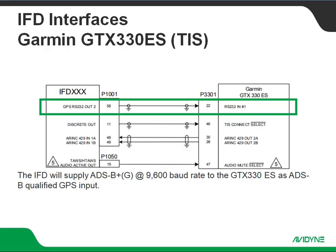So to jump right in, we're going to supply qualified ADS-B GPS data to the GTX 330ES via RS232. We're going to set that up for ADS-B plus G and that's going to be at a 9600 baud rate.